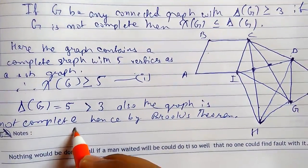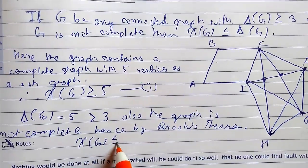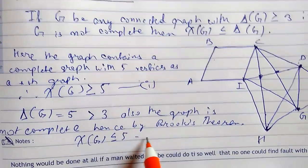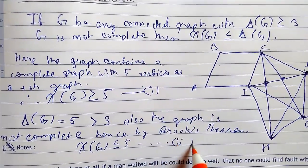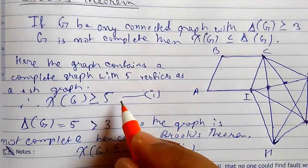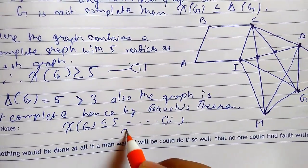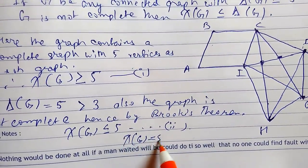We can say that χ(G) must be less than equals to 5. From Brooks theorem we can say this. From combining 1 and 2 the only thing that is common is χ(G) equals 5.